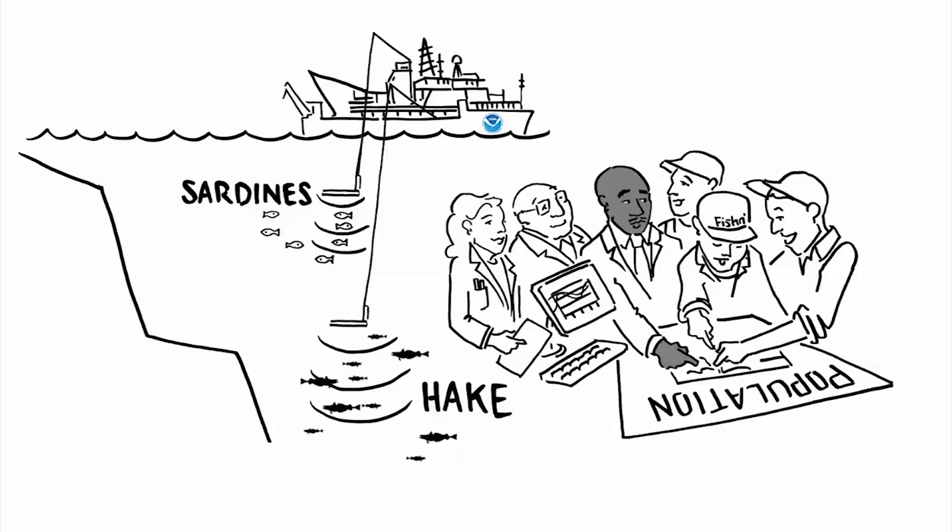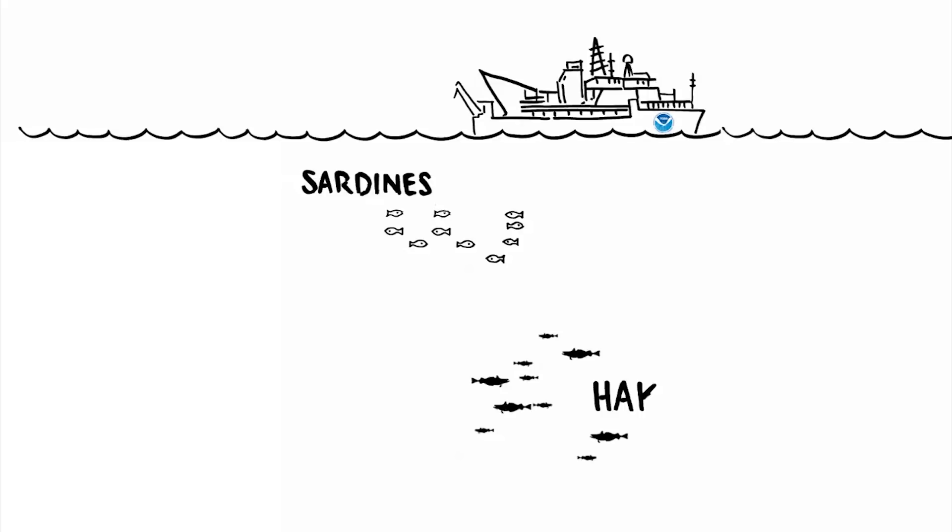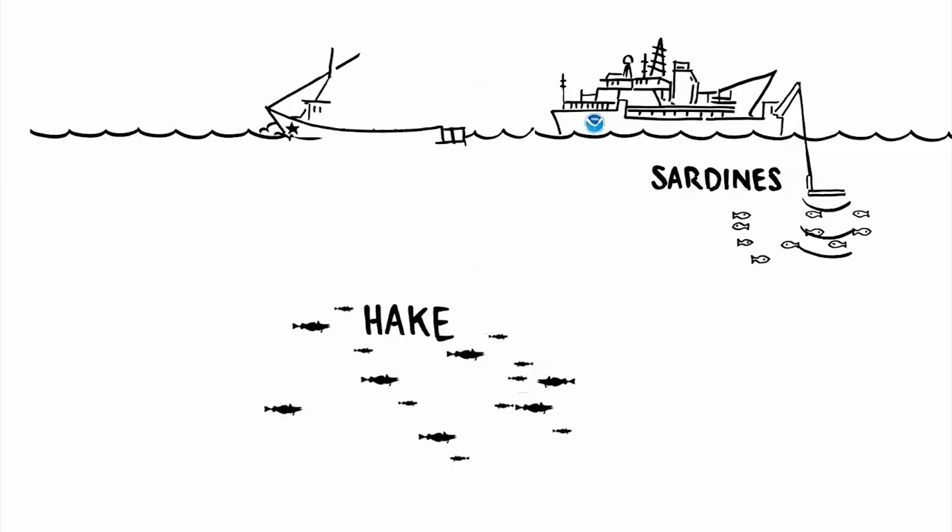While scientists were working aboard the stealthy Bell M. Shimada using sonar to find both species in trawling for sardines, a second ship, the Forum Star provided by industry, trawled for Hake.